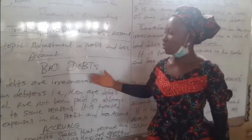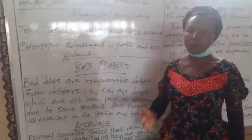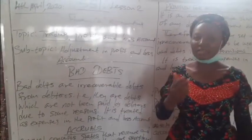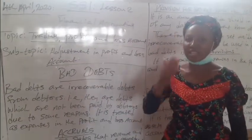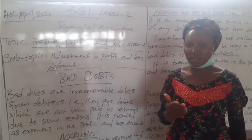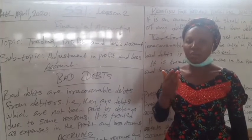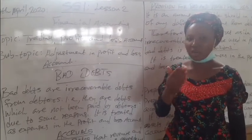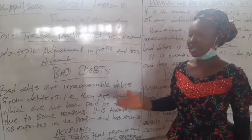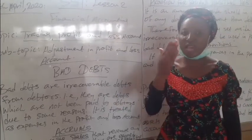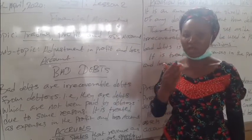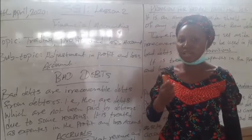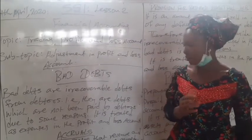How do you treat bad debt in a profit and loss account? Bad debt is treated as an expense in a profit and loss account, and it is posted on the debit side of the profit and loss account.